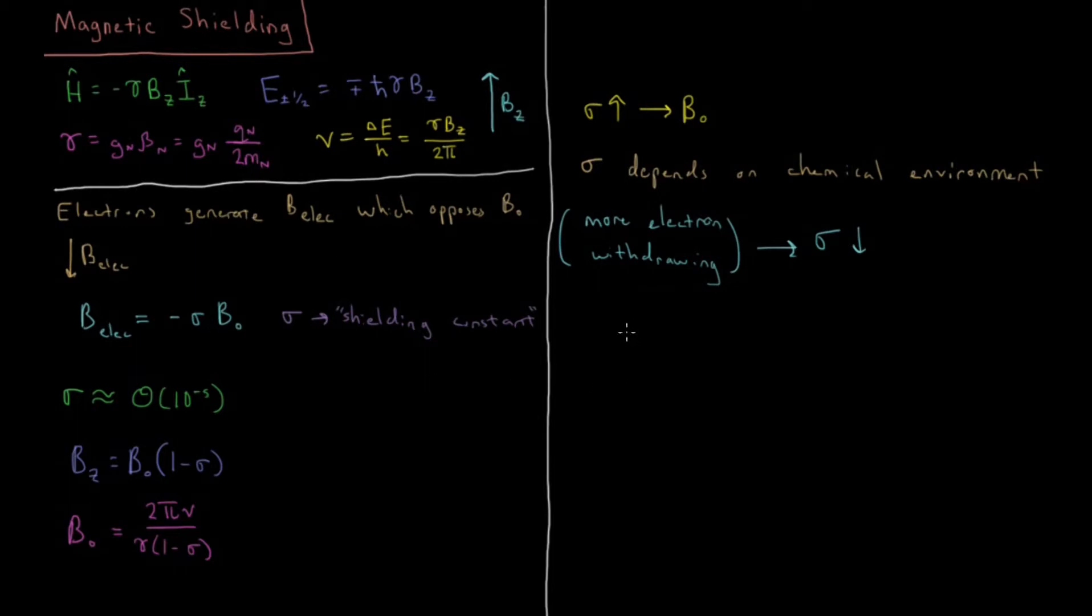This is one reason why tetramethylsilane is chosen as the reference in proton NMR spectroscopy. Because TMS has a very high value for sigma. The protons in TMS are very well shielded and thus they're going to appear on a slightly different part of the spectrum relative to everything else. They take a much higher magnetic field to generate their resonance frequency than most typical protons which are in our typical organic molecules.